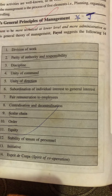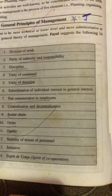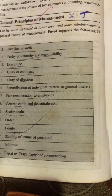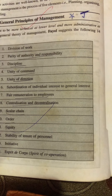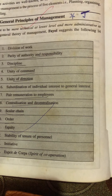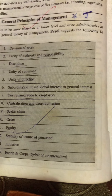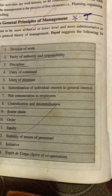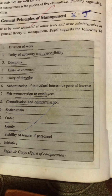The next point is subordination of individual interest to general interest. The individual interest should be given less importance, while the general interest should be given the most importance. Fayol said that individual interest should be subordinate to the general interest of the organization.